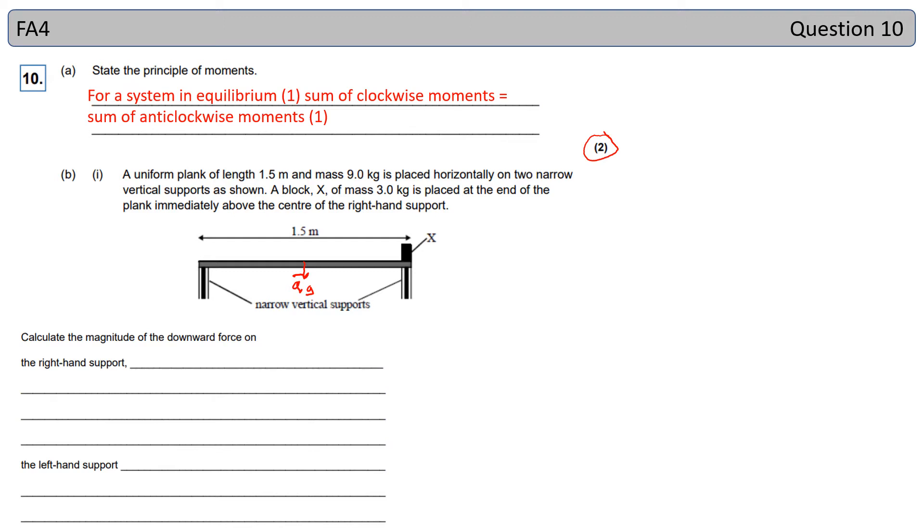Now, if this mass was somewhere in the middle, then we would need to take moments about one of the supports to work out the support force, and then we could work out the other force. But because this mass X, which is three G force downwards, is right over the right hand support, if we were to do that, it works out that being over the support is the same as the reaction force here, all being on this support force.